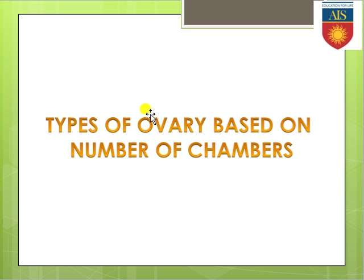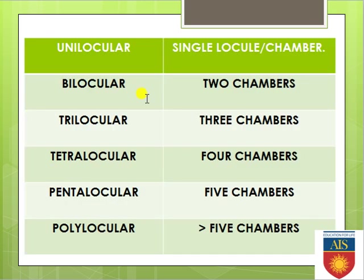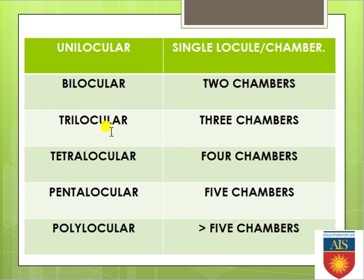Going to the next slide — types of ovary based on the number of chambers. The word locule means chamber. Based on the number of chambers, the ovary is classified into multiple types. If the ovary contains a single chamber only, it is a unilocular ovary — meaning there is no placenta. If there are two locules or two chambers, it is bilocular, meaning a single placenta is present.